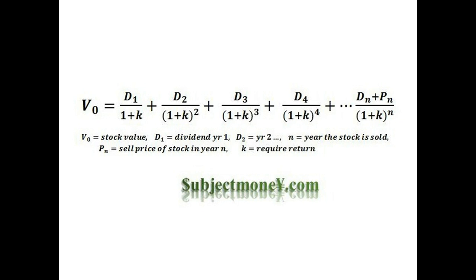Also, the future dividends are discounted by the cost of equity, where bonds are discounted by the cost of debt. In the dividend discount model equation that we've provided, V stands for the value, and the Ds stand for the dividend. N stands for the year the stock is sold, and P of N is the sale price of the stock in year N. Finally, K is the required return, or the discount rate.